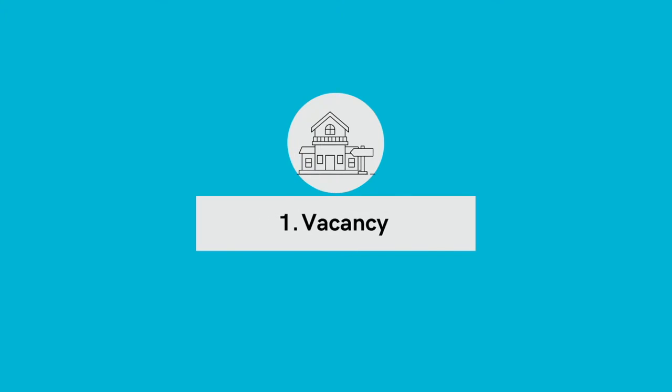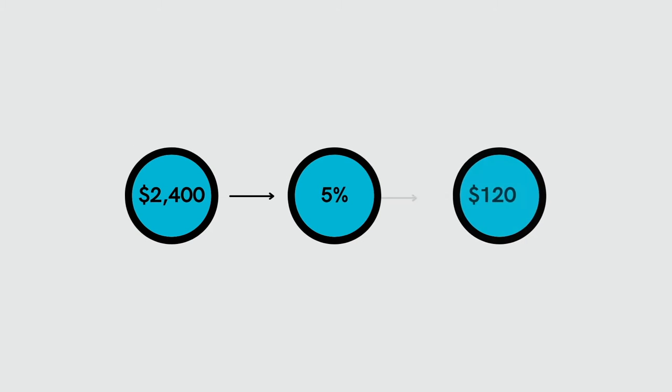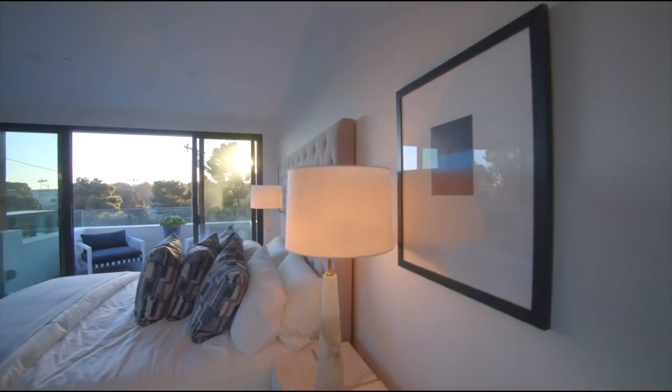First up: vacancy. It's not a matter of if you will have a vacancy — it's when. Make sure you have enough money in your accounts to cover your property when it's vacant. I use a minimum of 5% of my gross monthly revenue for vacancy allowance. If your vacancy rate in your area is higher than 5%, you have to use the higher number. On that $2,400 a month rent, 5% is $120 a month. It takes 20 months to build up enough vacancy reserve to cover one month of the property being vacant, meaning you can only have your rental sit empty for one month every one and a half years.